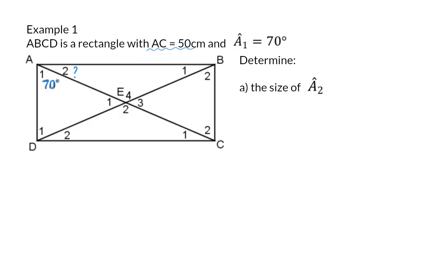When the type of quadrilateral is given in a question, that is always your starting point. Here we are given that this is a rectangle, and that means we have many properties that we can use.